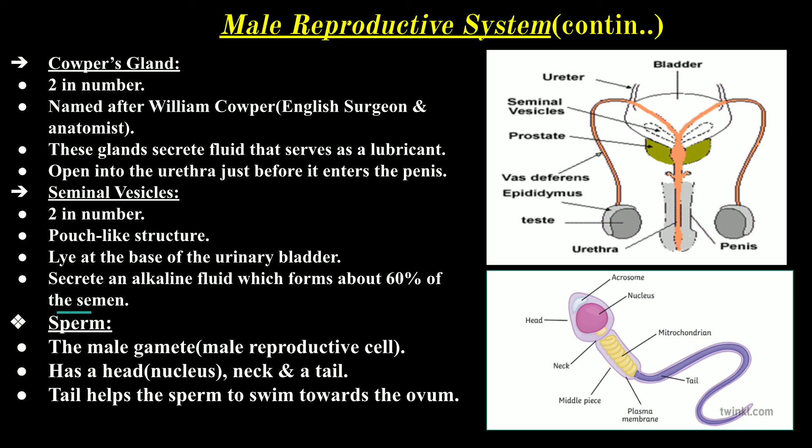Now we come to the male reproductive cell — the sperm — which is the male gamete. From the picture, the sperm has a head, a neck, a middle piece, and a tail. The tail helps the sperm to swim towards the ovum, making it motile. The head contains the nucleus, and the middle piece contains the mitochondria.